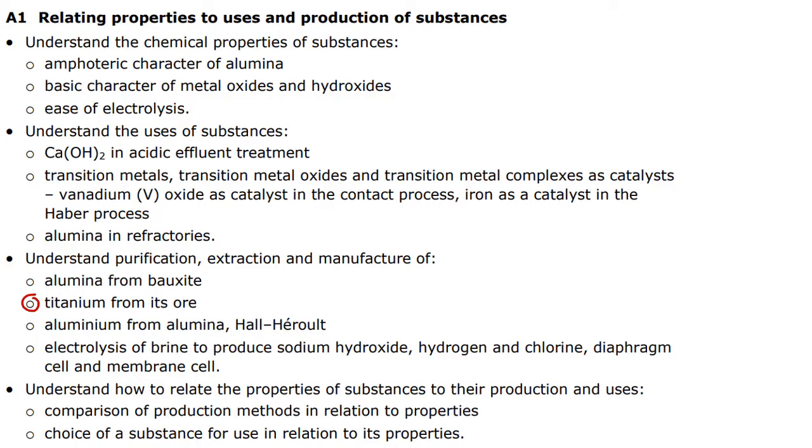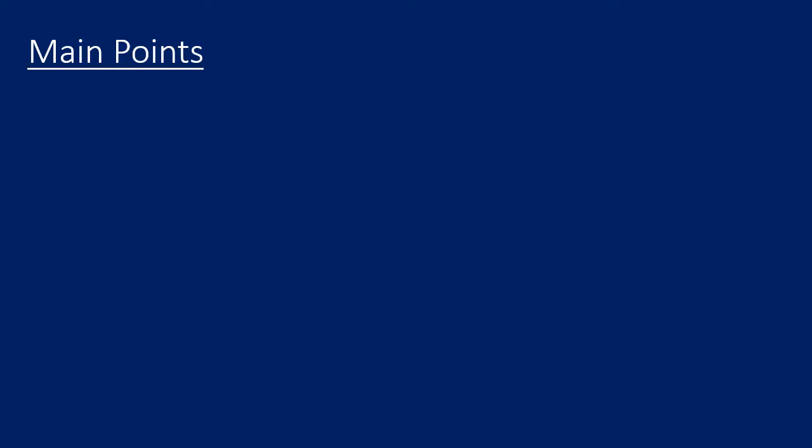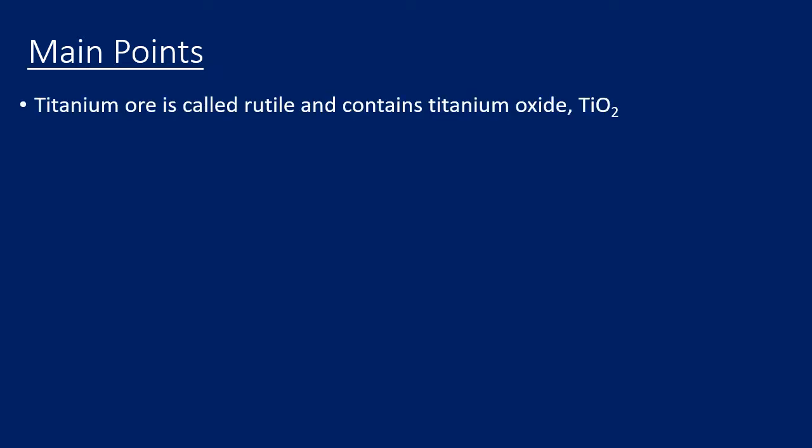Titanium ore is called rutile and it contains titanium oxide, which has the chemical formula TiO₂. This ore would be mined and then the titanium oxide would be extracted, and we're going to look at how we get titanium from titanium oxide.